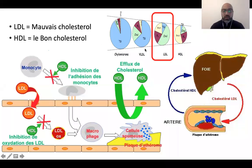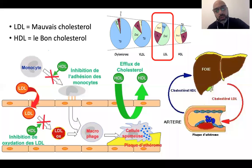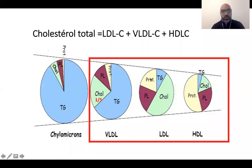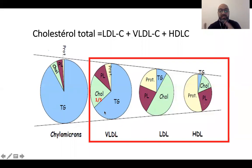Ce lipoprotéine LDL va traverser l'endothélium vasculaire, s'oxyder, et commencer à former la plaque d'athérosclérose qui va soit grossir, soit se compliquer et entraîner des syndromes coronaires aigus — que vous allez étudier durant les prochaines semaines. On a dit que le LDL est le plus athérogène, mais le cholestérol se trouve partout, notamment dans les molécules de VLDL, représentant environ un cinquième de leurs triglycérides.